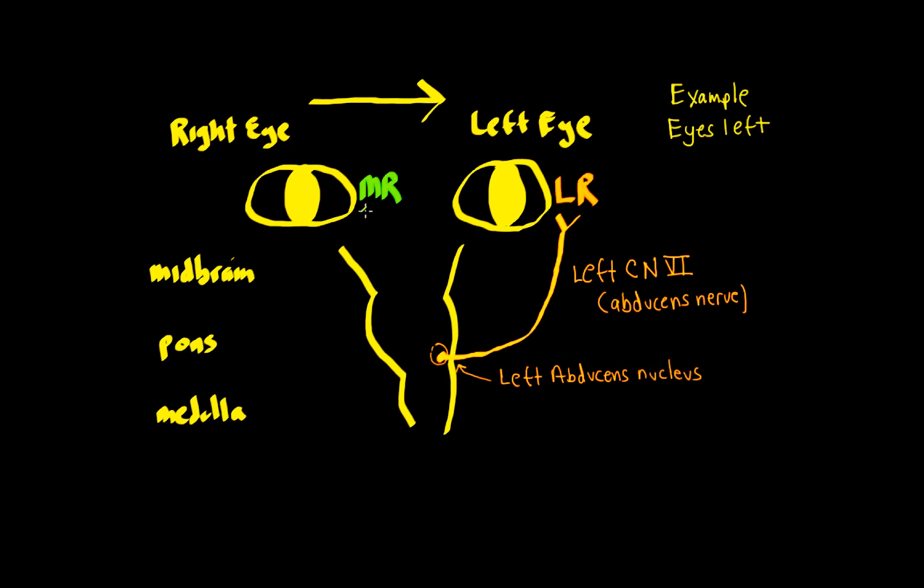Now let's look at the right eye. The right medial rectus needs to contract and that's going to be from the right oculomotor nerve, cranial nerve 3. And its cell bodies are found in the right oculomotor nucleus in the midbrain tegmentum.